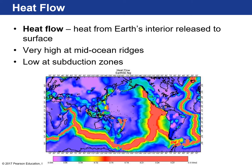Another valuable piece of evidence supporting plate tectonics is heat flow. You can measure the amount of heat coming off the Earth's crust, and what we notice is it's very high at mid-ocean ridges, which makes sense because these are volcanically active areas with a lot of heat being radiated off the ocean crust.